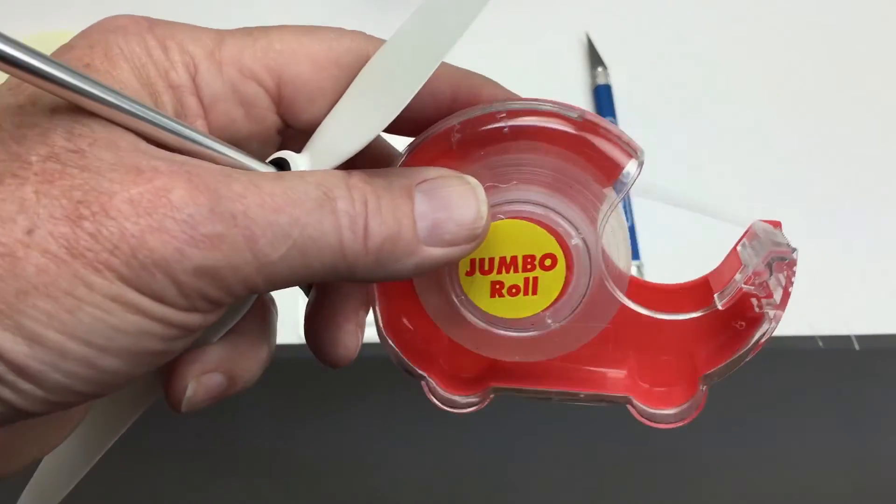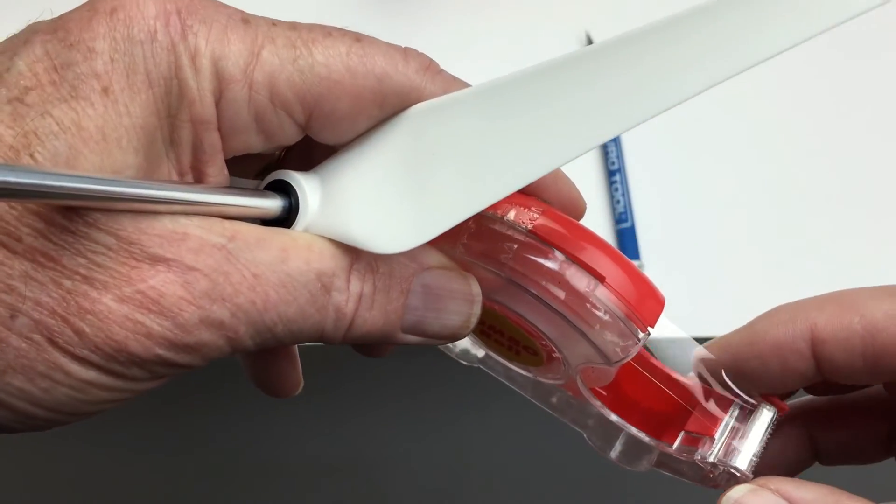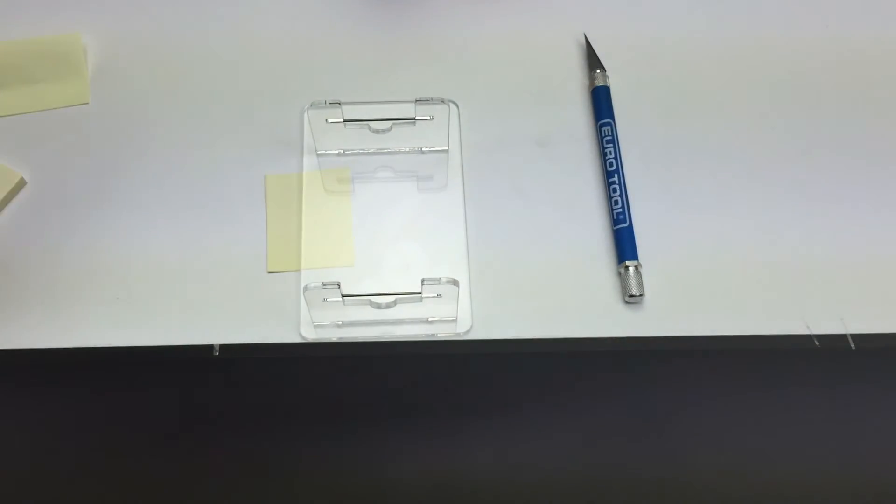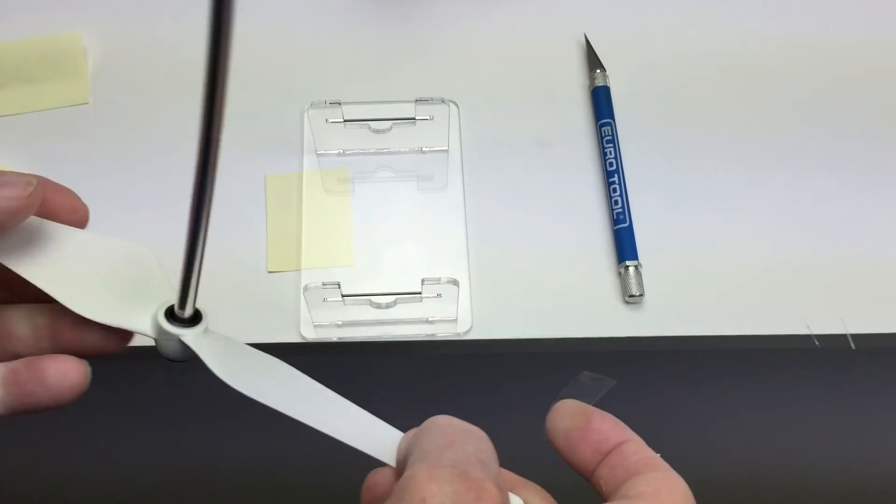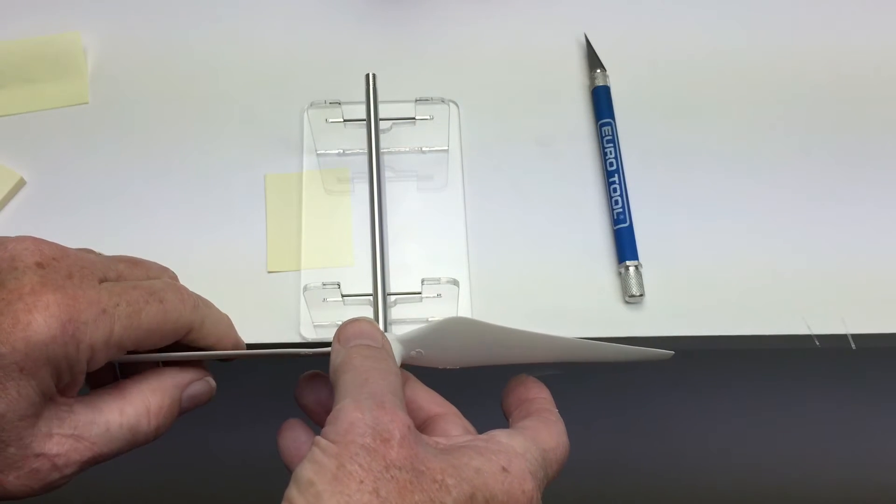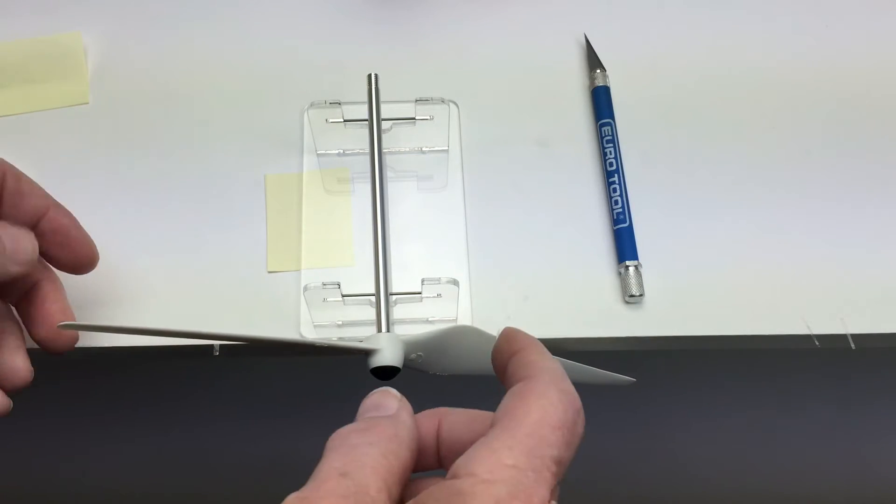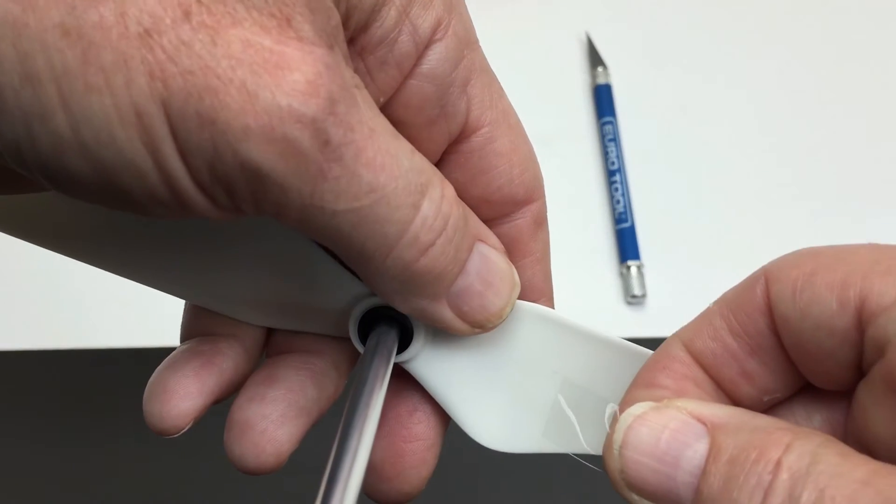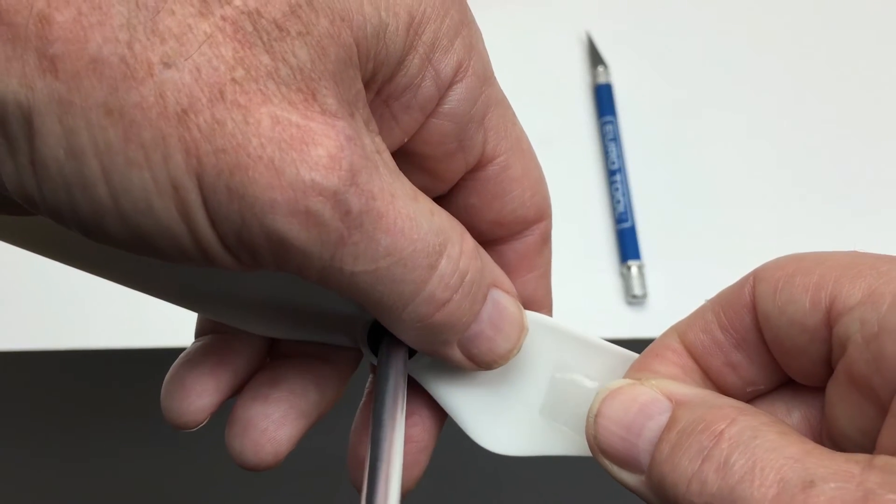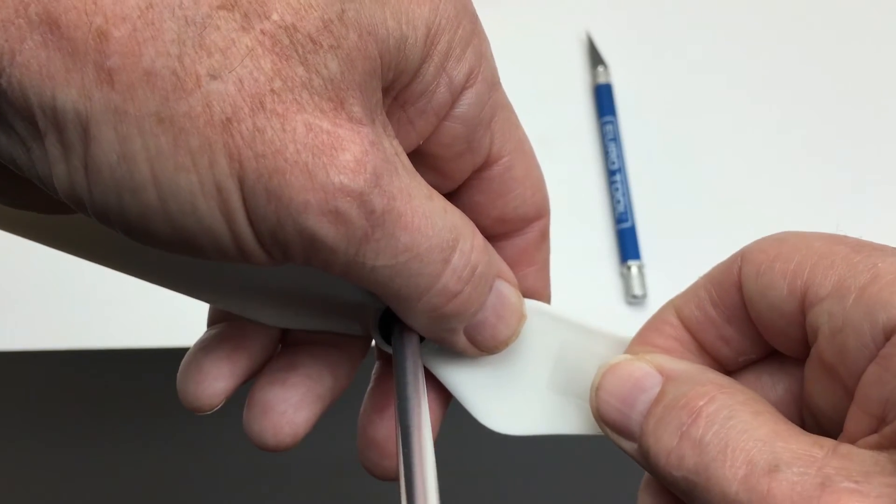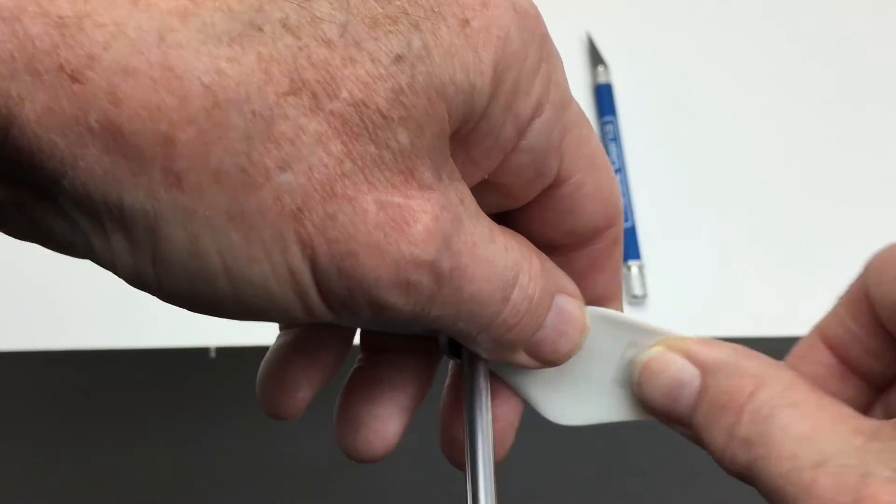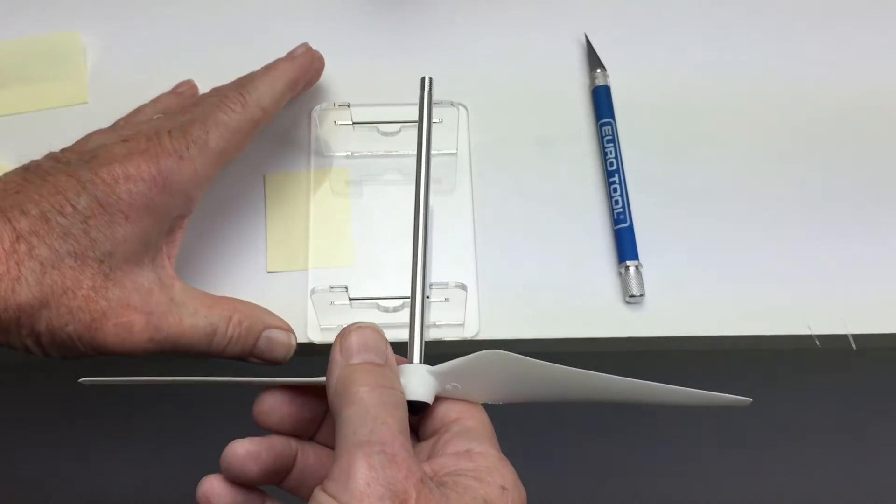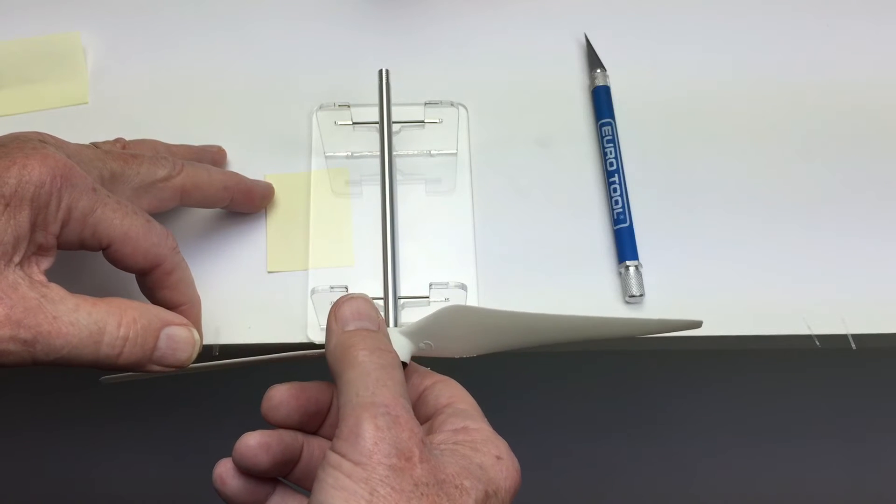I use dollar store tape, it's cheap, it's clear, it sticks really well. We'll pull off a small piece. Check to be sure to put it on the right side. This is going to be the heavy side, so put this piece of tape right in the middle, let it go over the end.